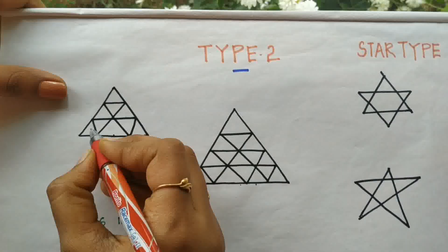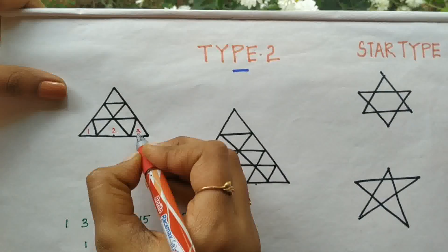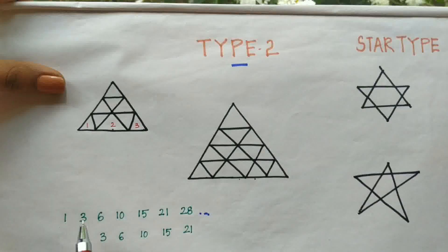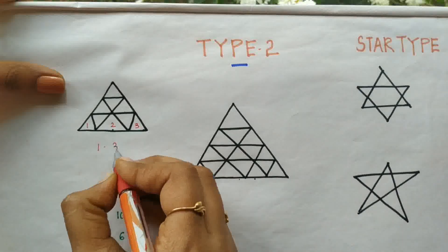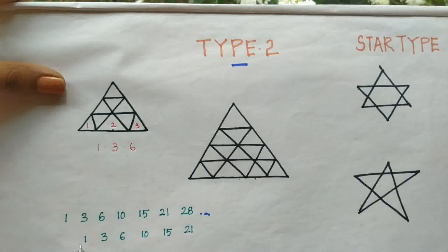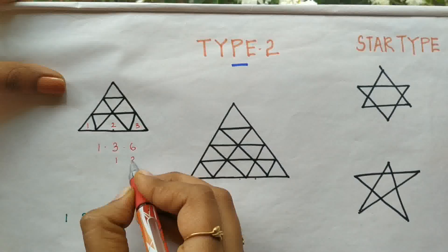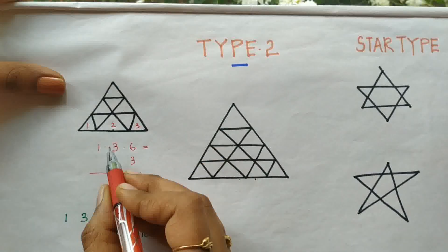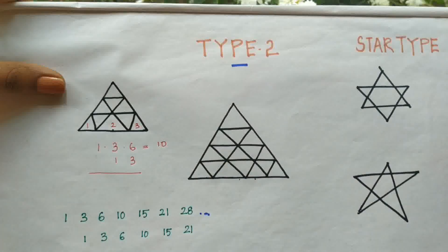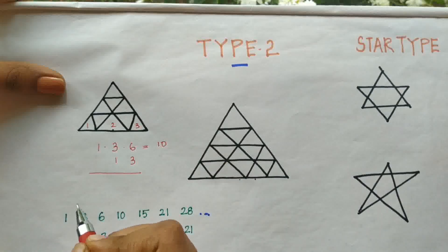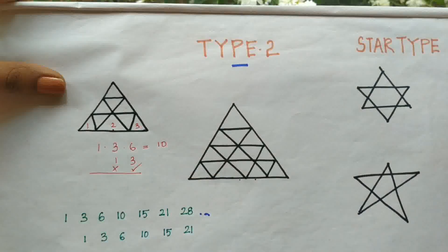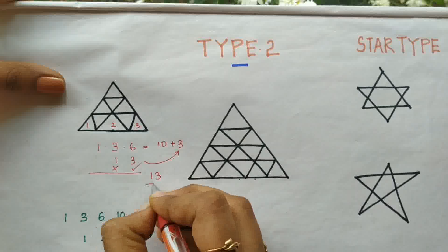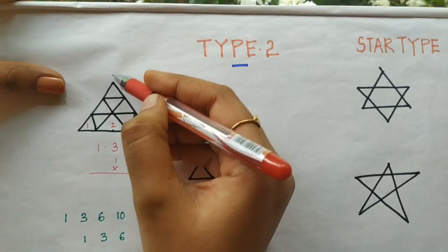Let's count the base — we have one, two, and three, so three segments. We take three numbers from the series: one, three, six. For the bottom line, we take two numbers: one and three. We add the corresponding numbers: four plus six equals ten. Then the trick — take the first number from the bottom line, which is three. So the total is ten plus three, which equals thirteen. There are thirteen triangles in this particular image.